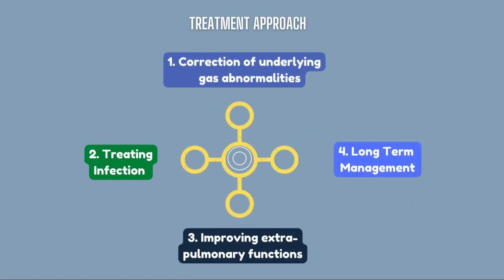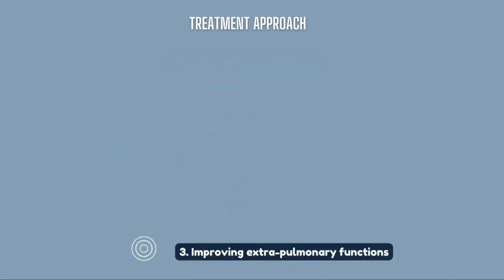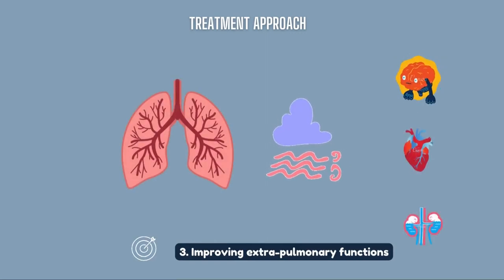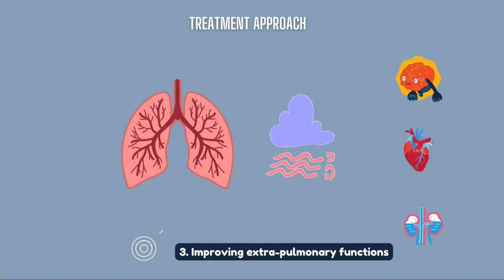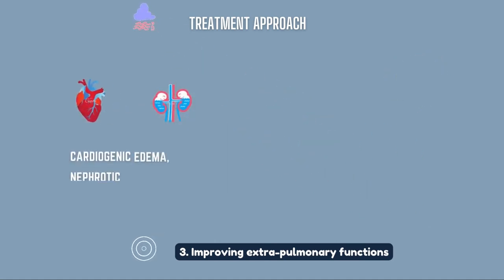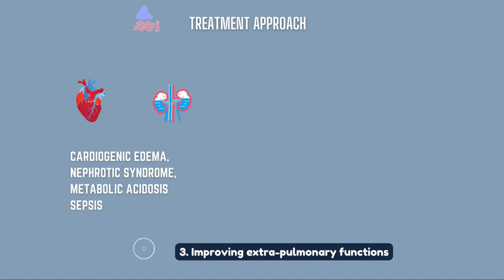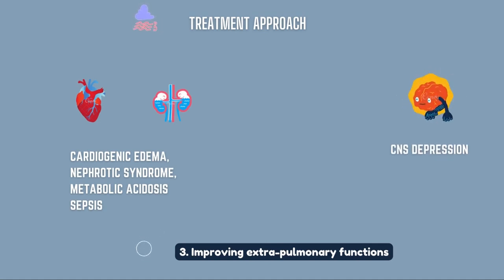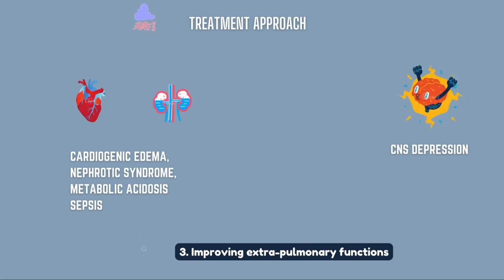We also need to treat extrapulmonary causes of respiratory failure — conditions that primarily cause respiratory failure by their effect on structures other than the lungs. Extrapulmonary causes include cardiogenic edema, nephrotic syndrome, metabolic acidosis, and sepsis. A second major cause is CNS depression due to drug overdose and narcotics, as well as poisoning and subdural hemorrhages in the ventricles and midbrain, which also cause reduced respiratory drive. We need to identify extrapulmonary etiology and treat it accordingly.